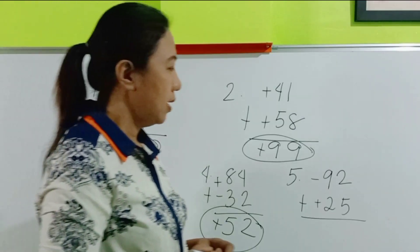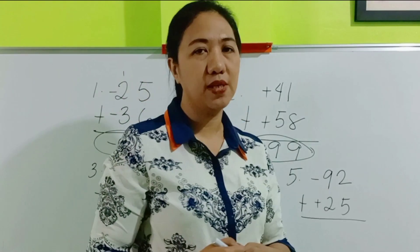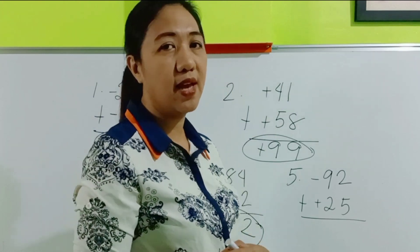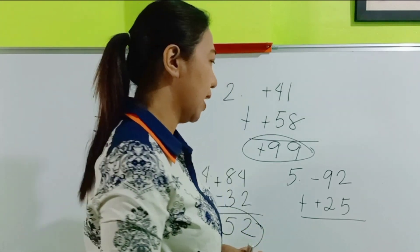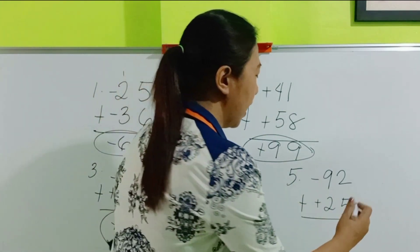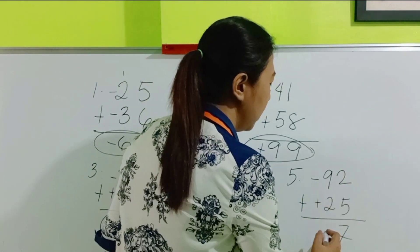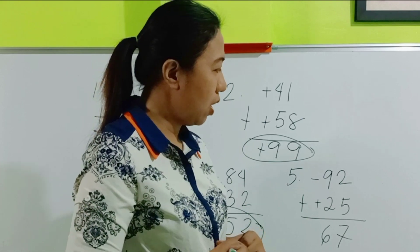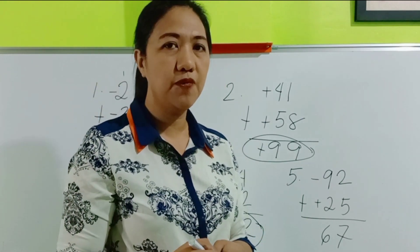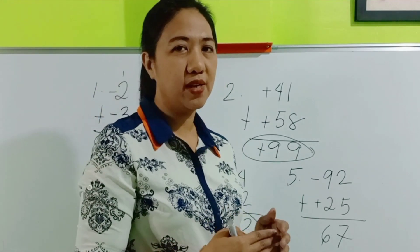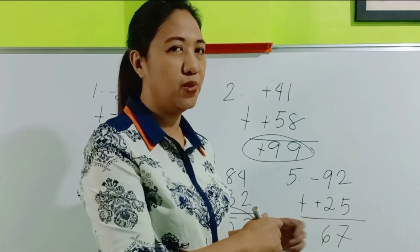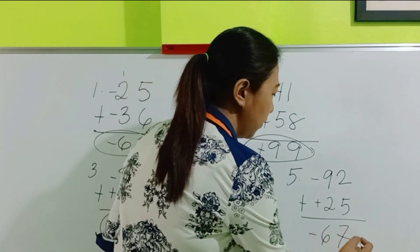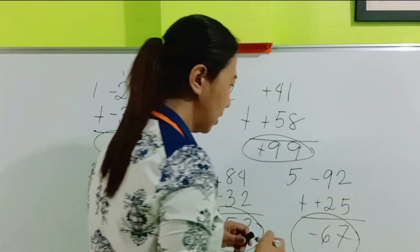And the last one: negative 92 plus positive 25. They don't have the same signs, so we have to subtract. 92 minus 25 — we have to borrow — it's 67. The sign of the negative number should be followed because 92 is bigger in absolute value than 25, so we follow negative 92. The answer is negative 67.